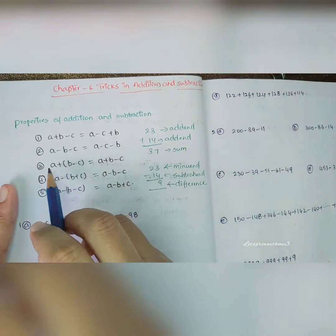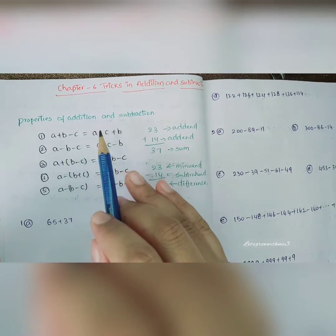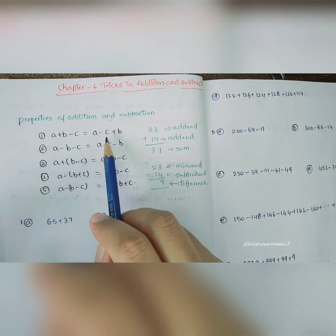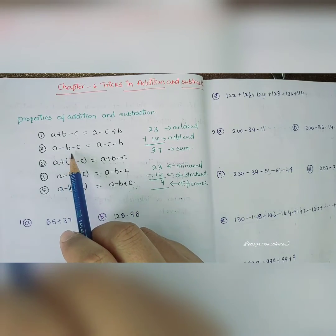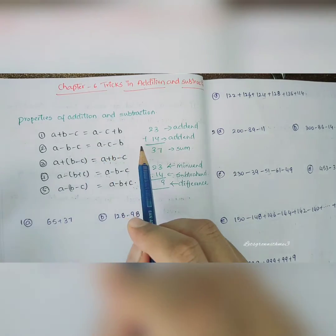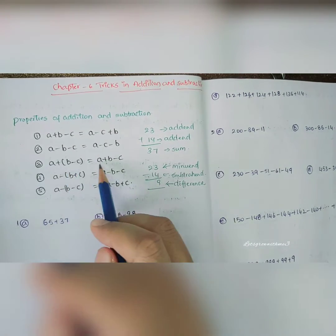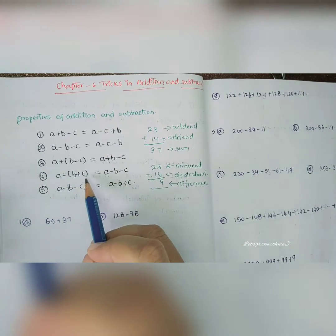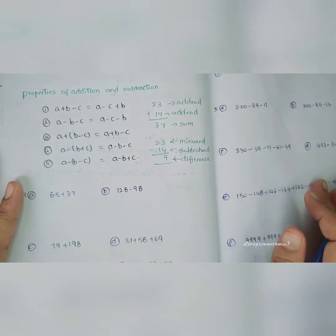Let's see what properties we have in addition and subtraction. In addition and subtraction, order doesn't matter. With the help of that, we can derive a lot of things. For example, a + b - c equals a - c + b. Also, a - b - c equals a - c - b. Let's see how these formulas are going to make our addition and subtraction easy.